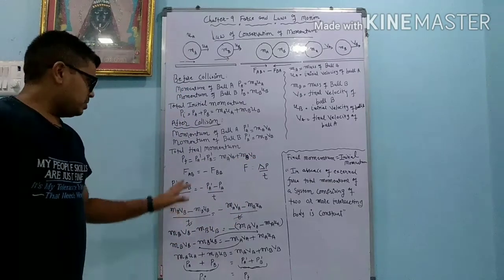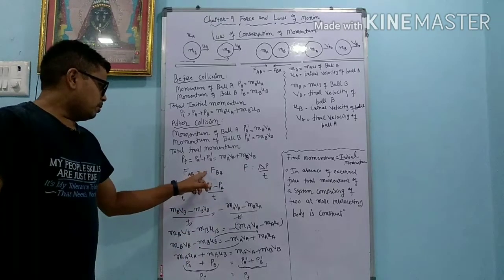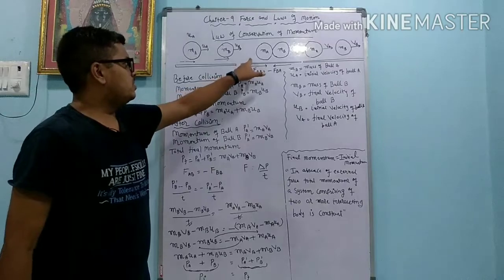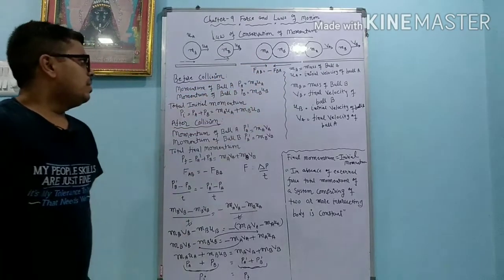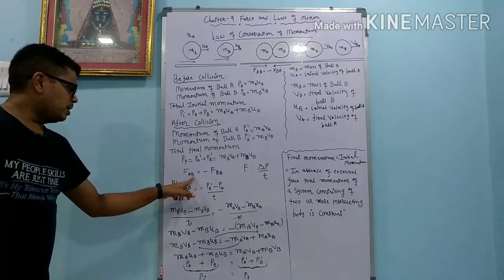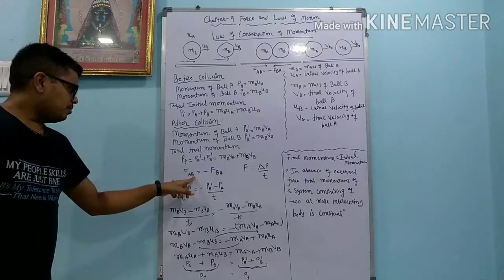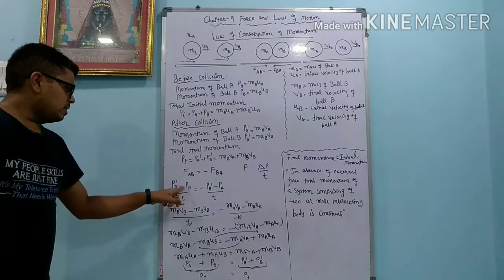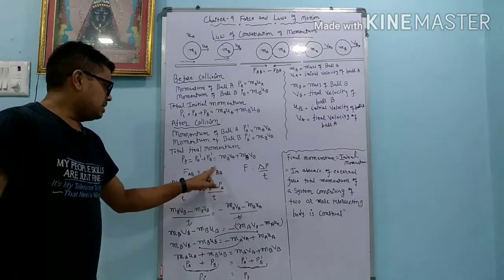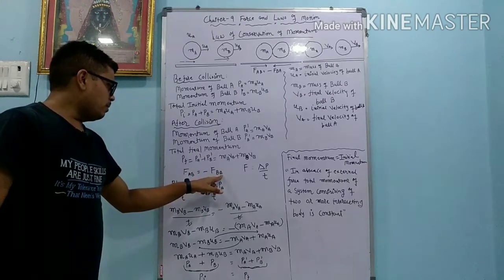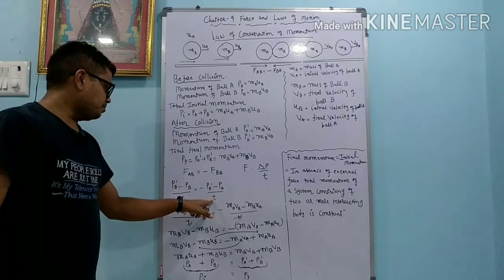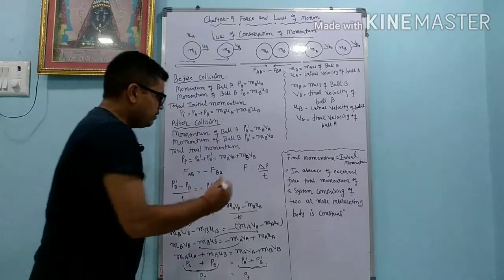Now dear students, we know Newton's third law — action and reaction are equal in magnitude but they are in opposite direction. So here action is FAB and the reaction is FBA. FAB means ball A applies force on B, so momentum of ball B changes. Final momentum of ball B, that is PB dash, minus initial momentum of ball B, that is PB, divided by T, equals to FAB with a minus sign. This we can write according to Newton's second law, that is F equals to delta P upon T.